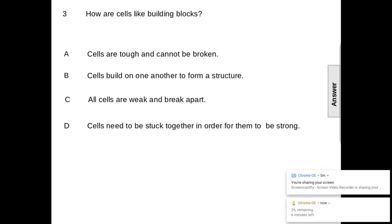Number three, how are cells like building blocks? Is it A, cells are tough and cannot be broken? B, cells build on one another to form a structure? C, all cells are weak and break apart? Or D, cells need to be stuck together in order for them to be strong? The answer is B, cells build on one another to form a structure.